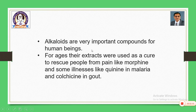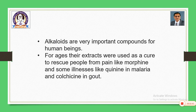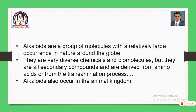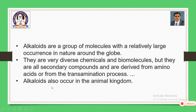Alkaloids are very important compounds for human beings. For ages, their extracts were used as a cure to rescue people from pain, like morphine, and some illnesses like malaria using quinine-like alkaloids, and gout using colchicine. Even today some of the alkaloids are used in treatments. Alkaloids are a group of molecules with relatively large occurrence in nature. They are very diverse chemicals and biomolecules, but they are all secondary compounds derived from amino acids by the trans-imination process.